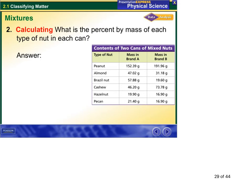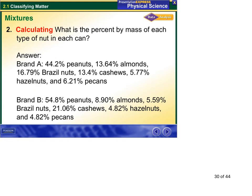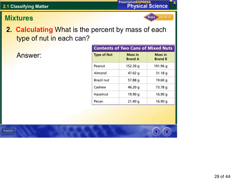And what is the percent by mass of each type of nut in a can? And here I'll just give you, there's the answer. So I'm going to back up to here. Quick demonstration of how you would do that. First thing we'd have to do is add up, get the total for brand A. We'd get the total for brand B.